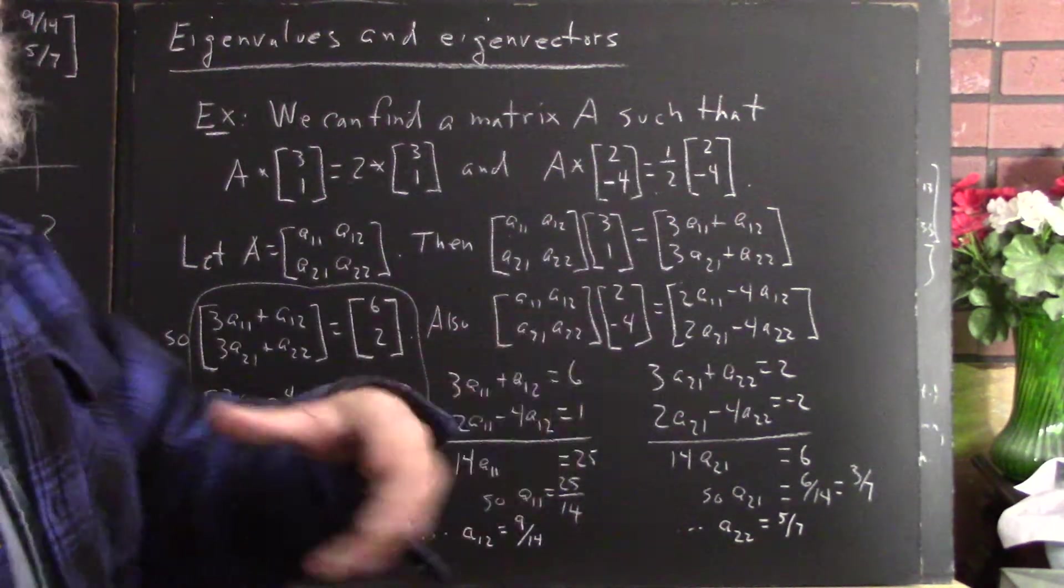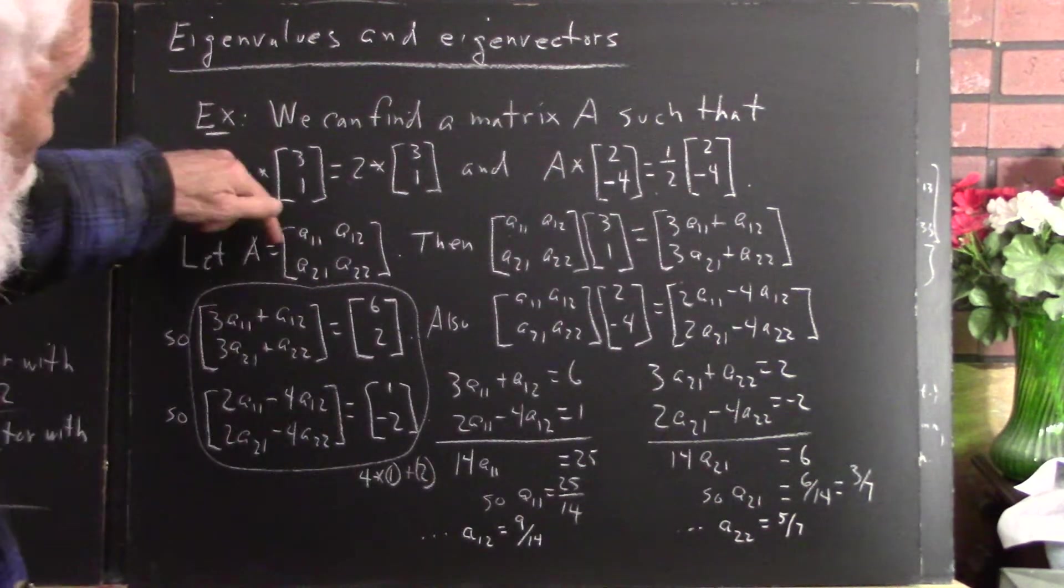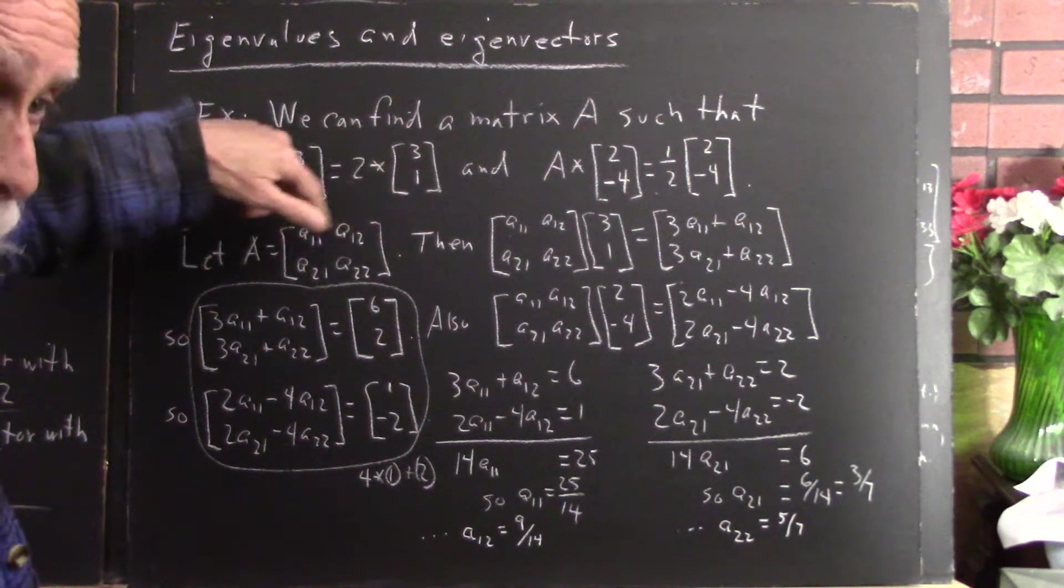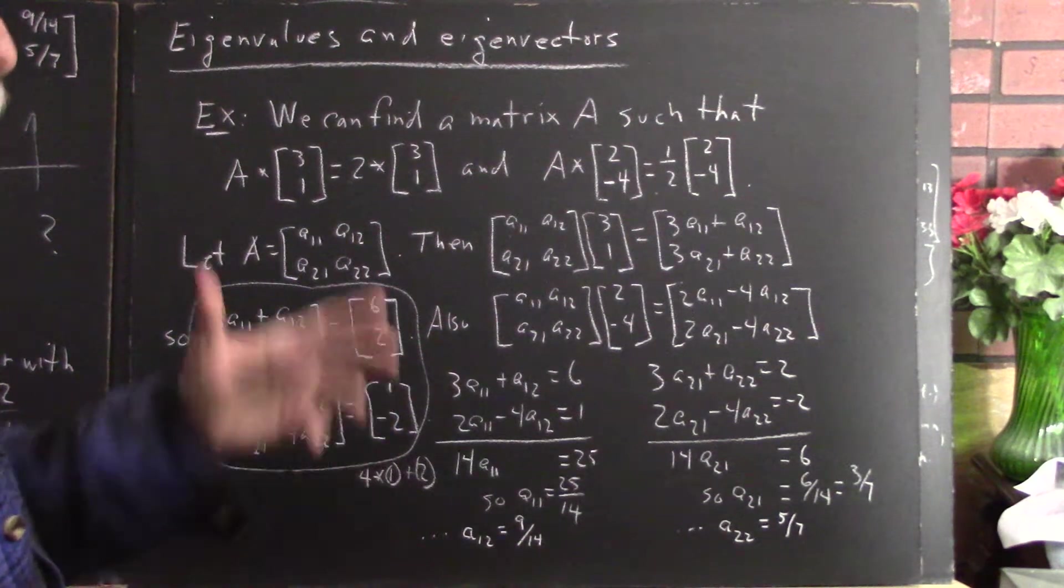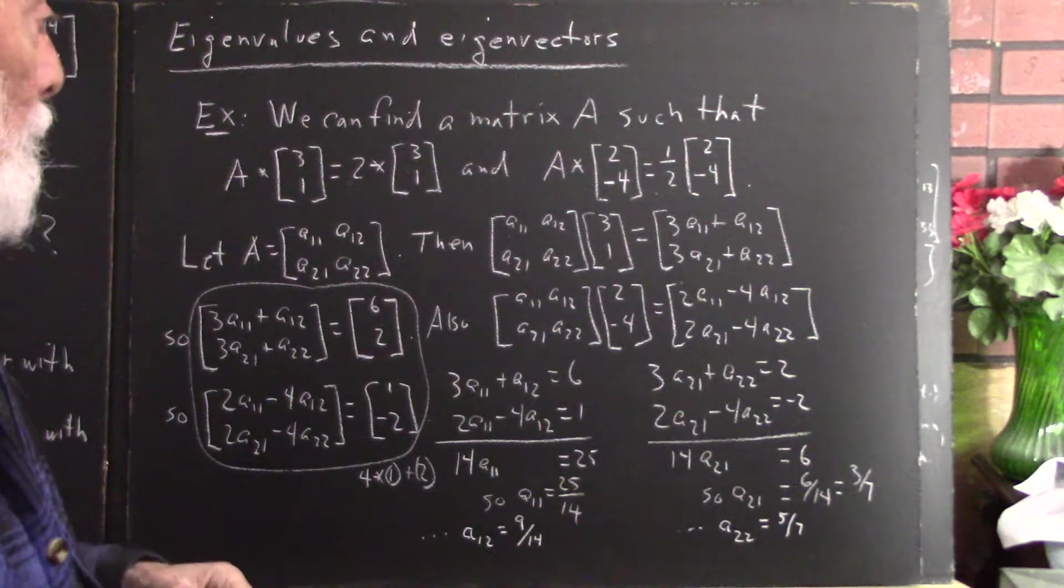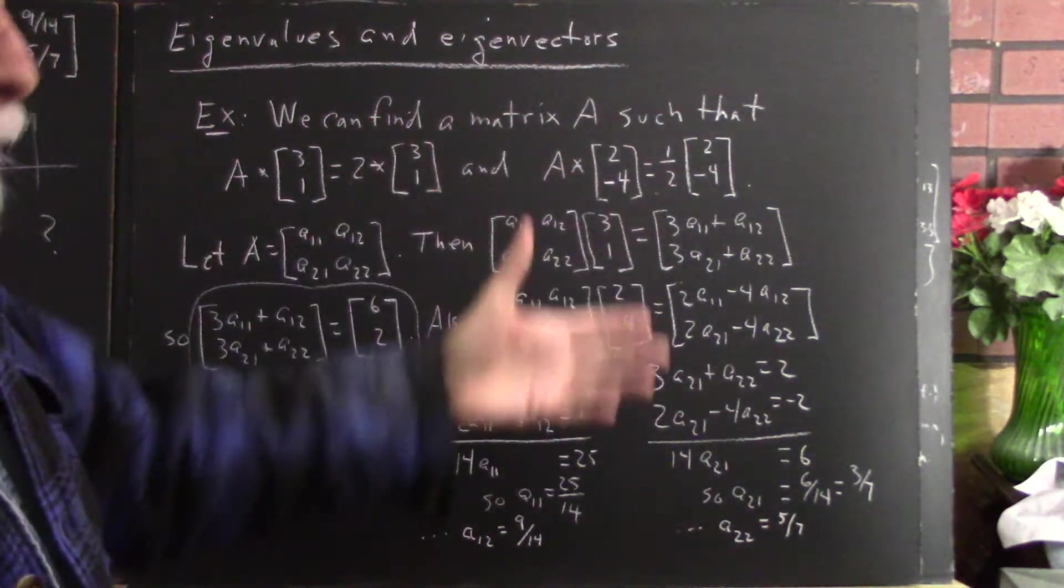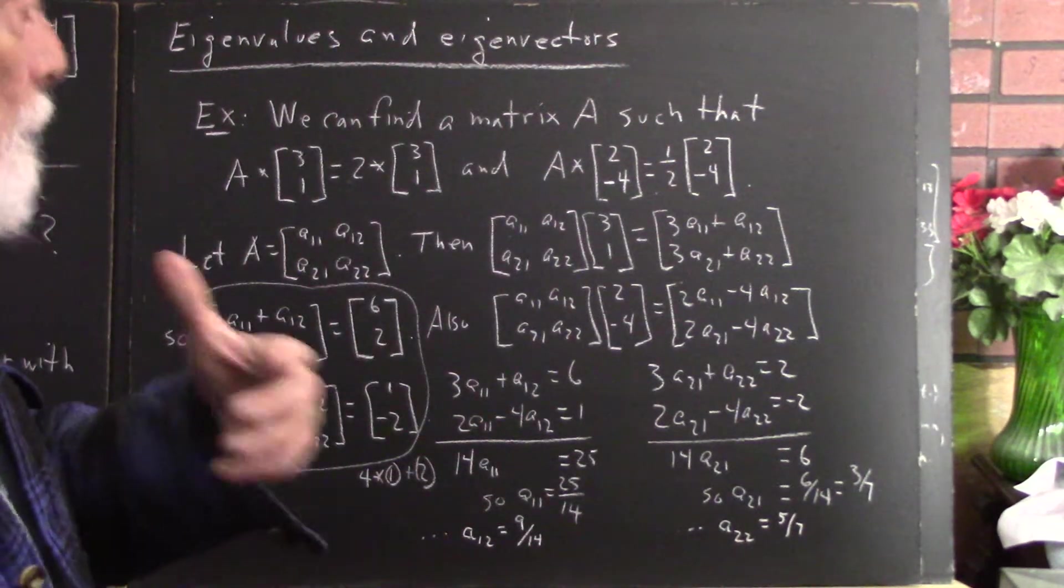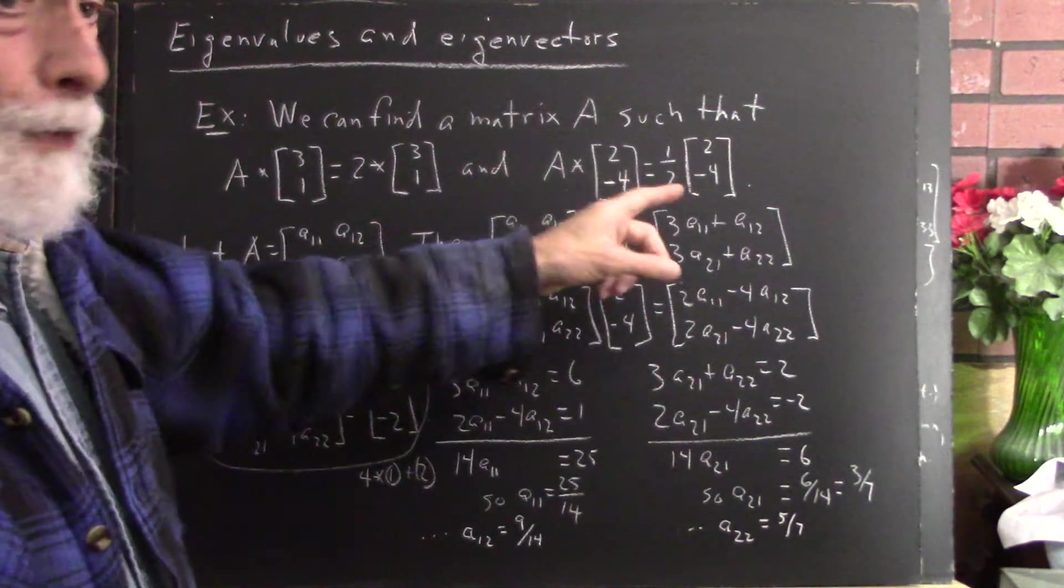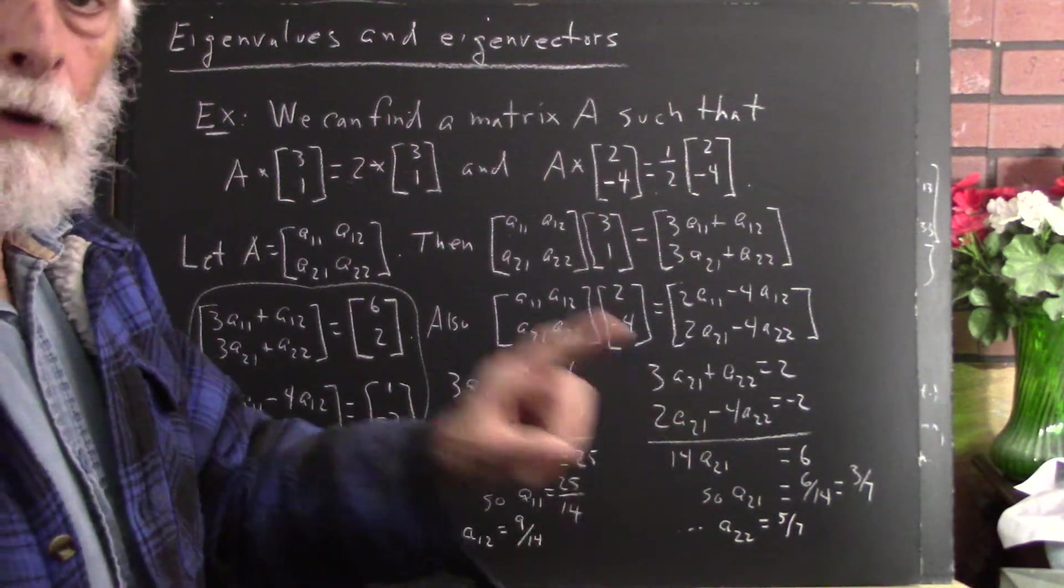If we want to go to three-dimensional space, then we'd have a11, a12, a13, a21, a18, and so forth. And we would have nine variables. And we'd have bigger equations, but we'd end up with nine equations in the nine variables if we chose three eigenvectors with eigenvalues. We could do that.